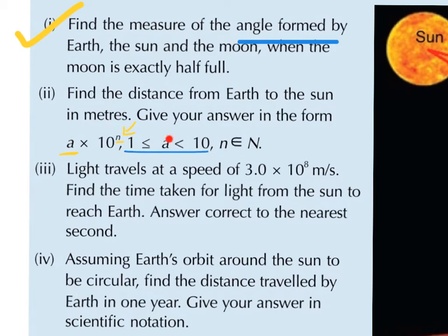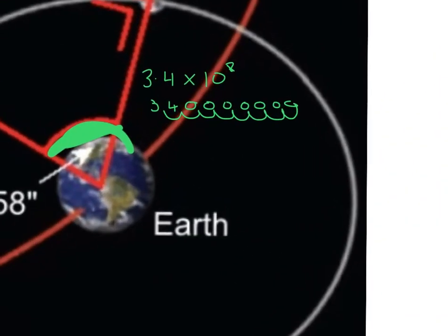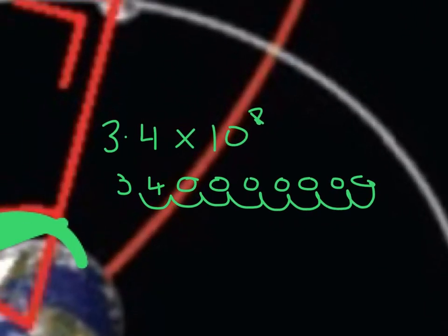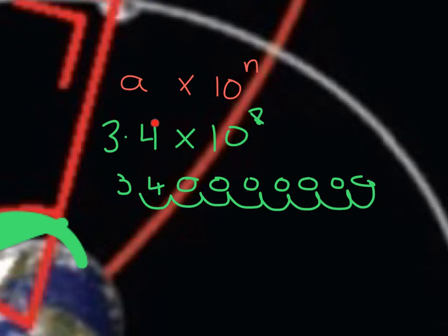So a has to be less than 10 and bigger than 1. For 3.4 × 10^8, the a is 3.4 — we wouldn't write 0.34 because that's less than 1, and we wouldn't write 34 because that's bigger than 10. It's important that the number here is bigger than 1 and less than 10.